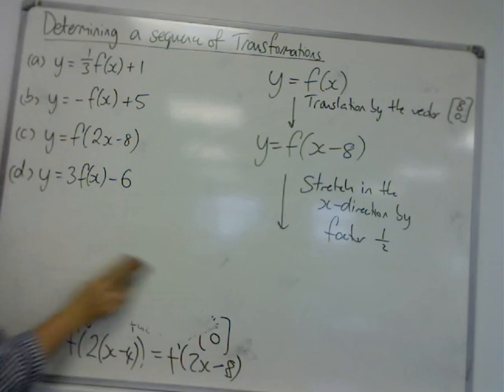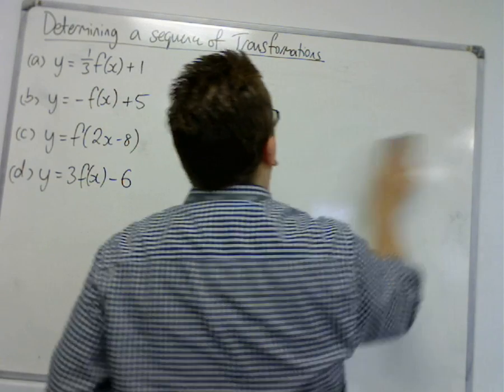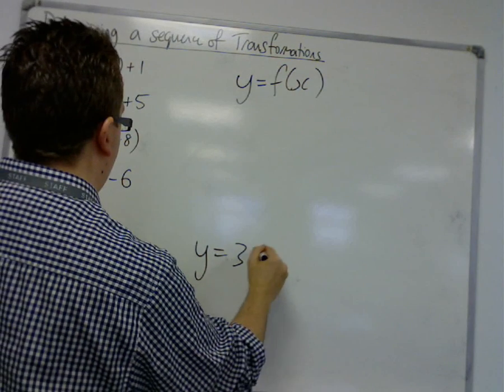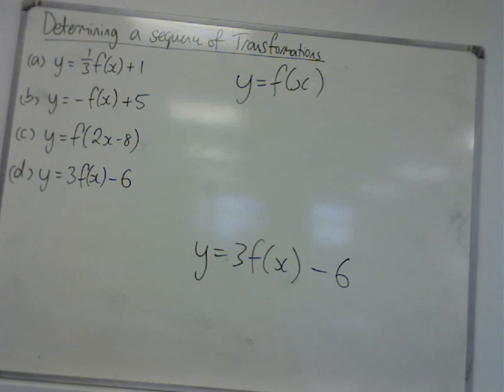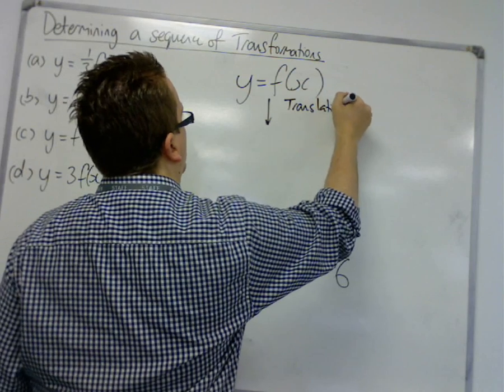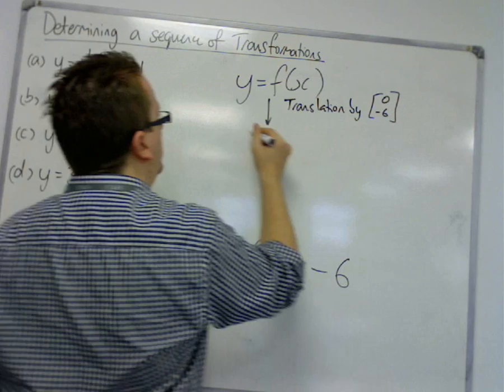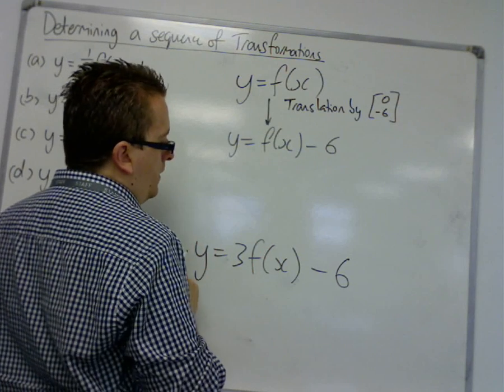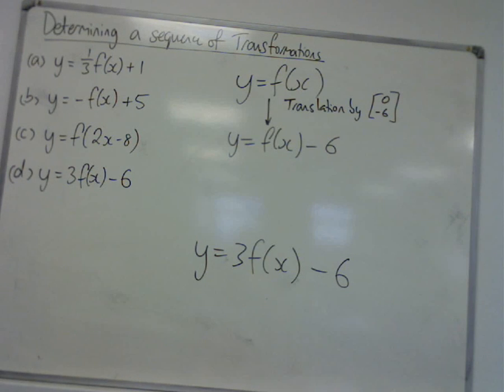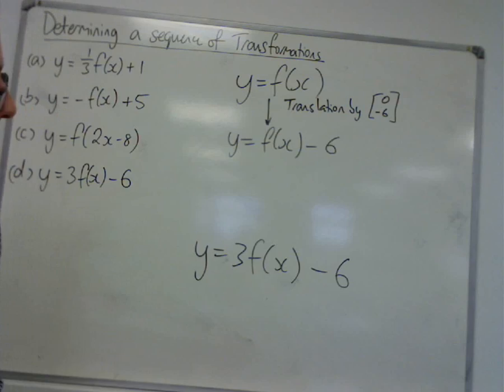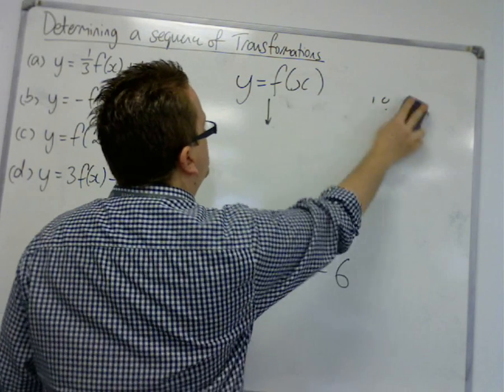Next. Right, last one here. y is equal to f of x. We're trying to get to y is equal to 3f of x minus 6. So, here's another case where you could do it two different ways. We could do the translation first. So, there's a translation by the vector 0 minus 6. So, we get y is equal to f of x minus 6. Oh, well, actually, tell a lie here. If I'm doing the translation by the vector 0 minus 6, we're going to hit problems now. So I've tell a lie. Let's backtrack on that.